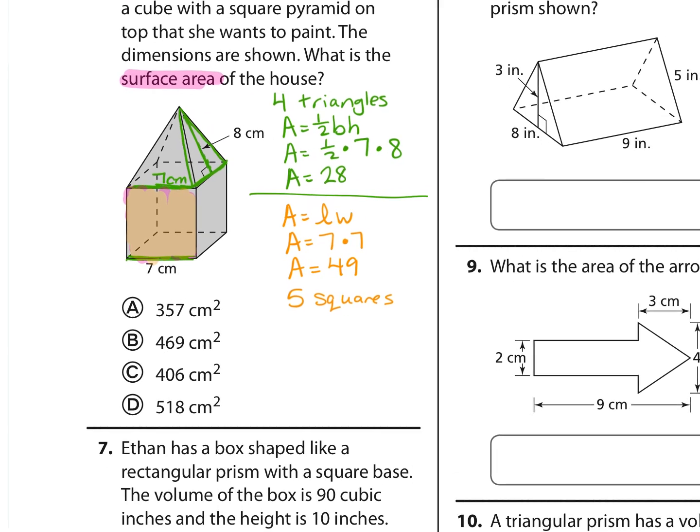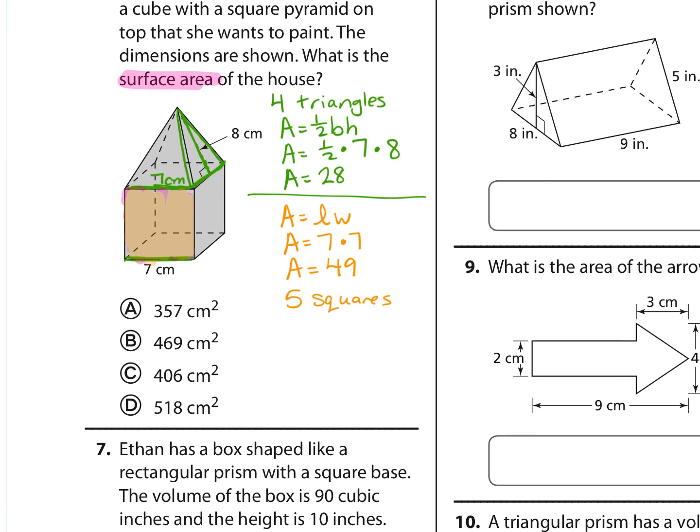Now we're just going to calculate the total surface area. We can say there's 4 that are 28 square centimeters and then 5 that are 49 square centimeters, and we add those together. We get 112 plus 245 and that equals 357. This is area, so it's measured in square centimeters. Answer choice A.